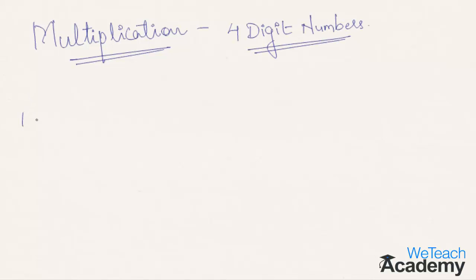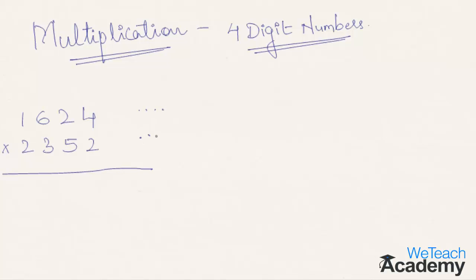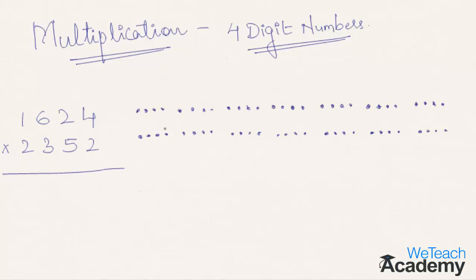Let's proceed with the four-digit multiplication. Let's multiply 1624 with 2352. As shown earlier, we draw patterns in the form of dots representing the digits of the numbers we are going to multiply. We will draw seven sets of patterns representing seven steps. Let's start with step one: unit digit multiplied by unit digit — 4 into 2 gives 8.